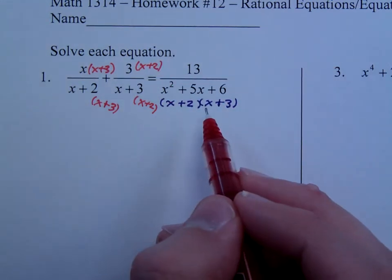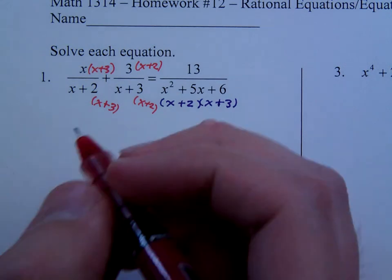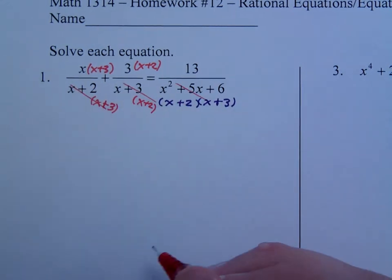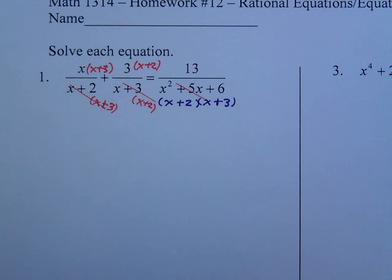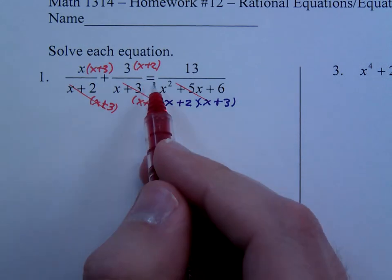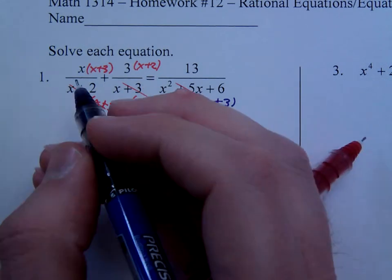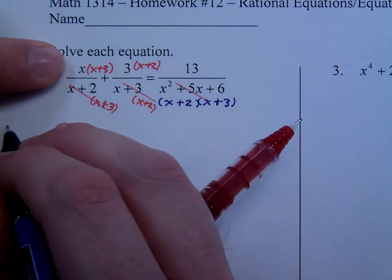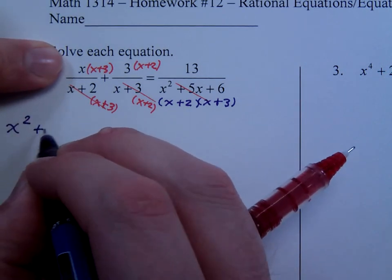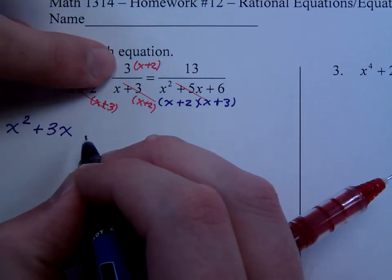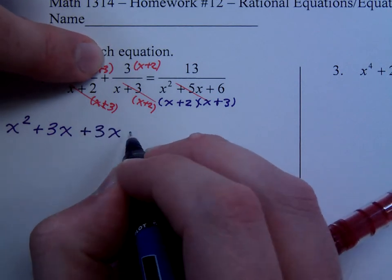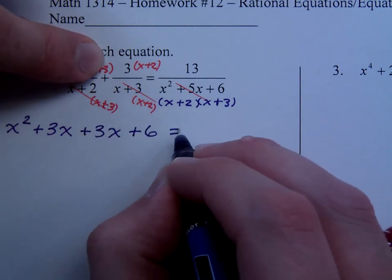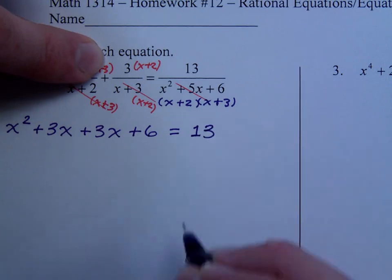Now that everybody has the same denominator, we get to cross these guys out. They don't really matter anymore as long as they are all the same and you have an equation. When I distribute, I have x squared plus 3x, plus 3x plus 6, and this is equal to 13.